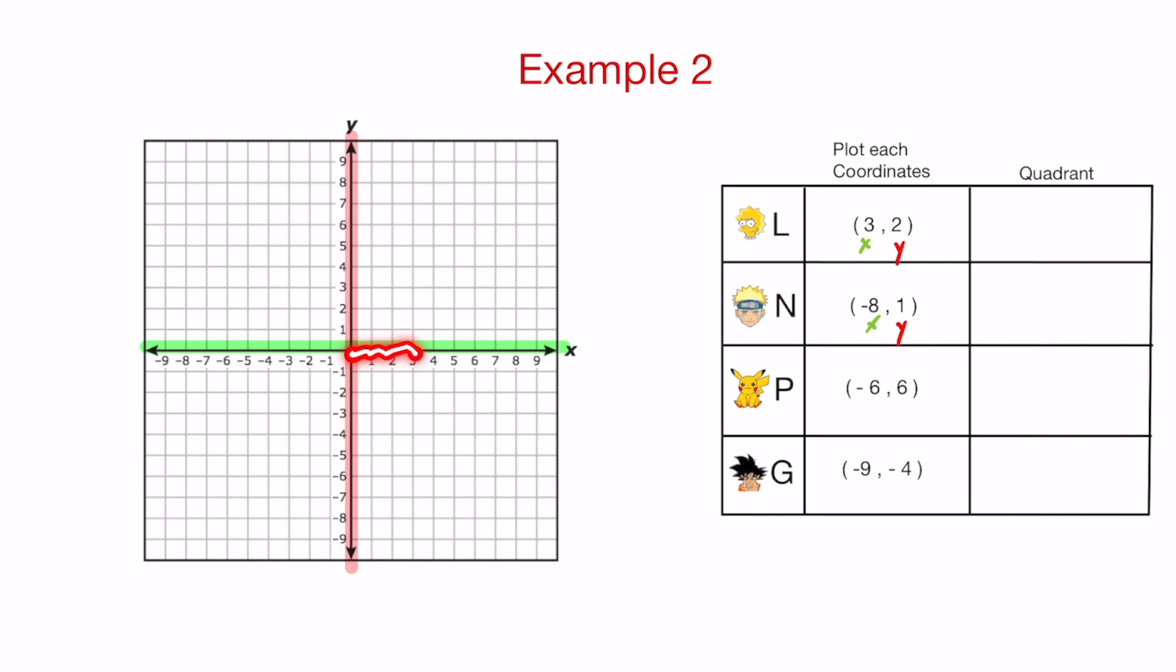You got to follow both directions. So now we got to pay attention to that number two. The two, since it's positive, means to go up two spaces. One, two. So let me repeat that. Start in the center, three to the right, and then go up two. That is where you're going to mark your point and we're going to call that L. L for Lisa.